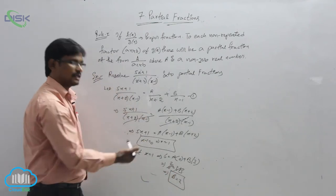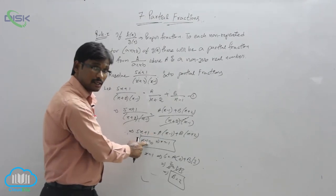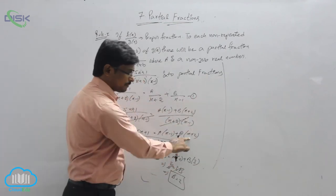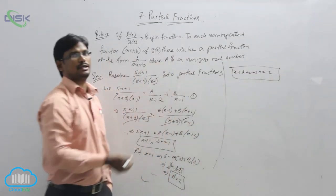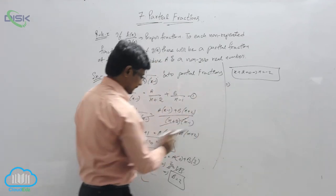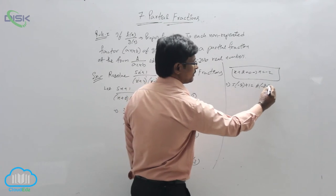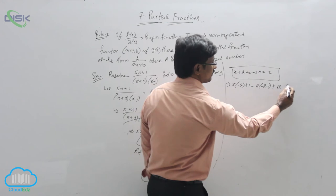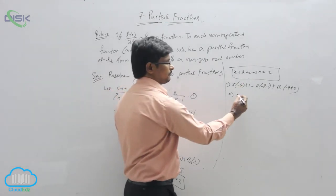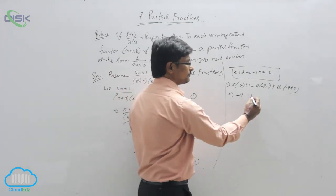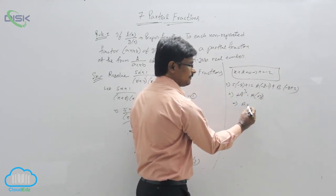Now for the second part, we consider (x + 2) = 0, which gives x = -2. Substituting x = -2: 5(-2) + 1 = A(-2 - 1) + B(-2 + 2), which gives -10 + 1 = A(-3) + B(0), so -9 = -3A. The negatives cancel and dividing by 3, the value of A is 3.